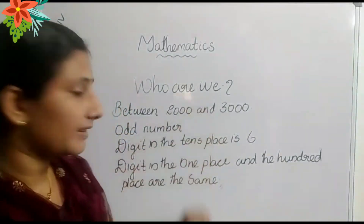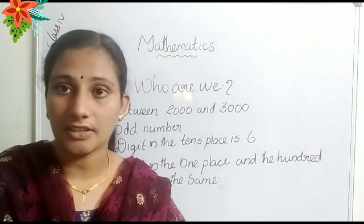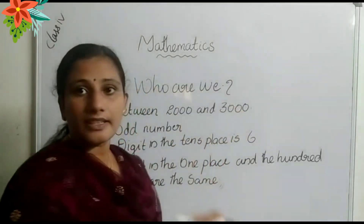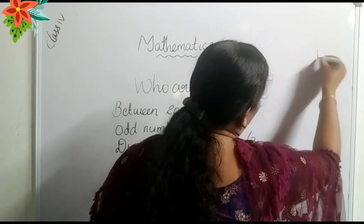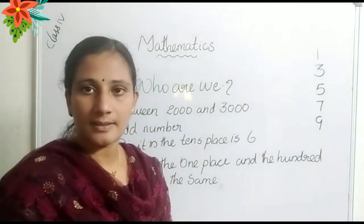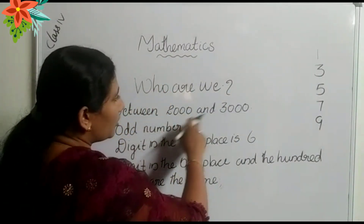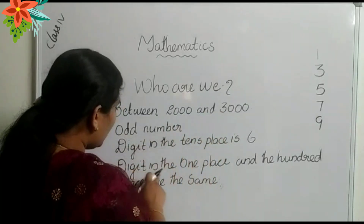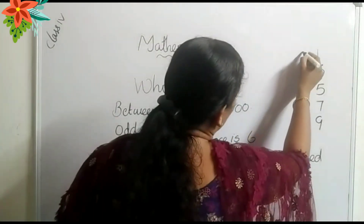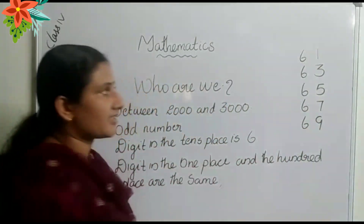This is a four-digit number. The digit in the 1st place and 100th place are the same. Then the digit in the 10th place is 6. So the 10th place is always 6. Next, we want to find these two digits — the 1st place and 100th place are the same.